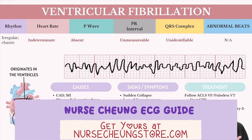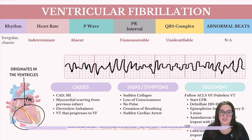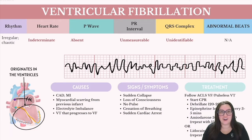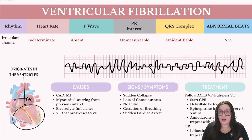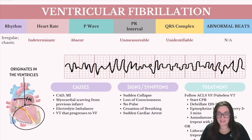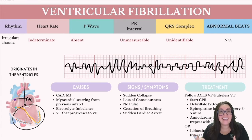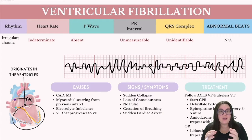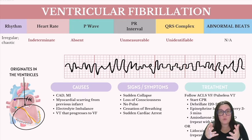Next up we have ventricular fibrillation, characterized by rapid, erratic electrical activity within the ventricles. This is a more severe form of cardiac arrhythmia, distinguished by a chaotic, disorganized pattern with no discernible waves or complexes on the ECG. It's really hard to measure because nothing falls in the same place — it looks like artifact on the screen, but it's not. What's happening is the ventricles are quivering rather than contracting coherently, leading to a cessation of effective blood pumping.